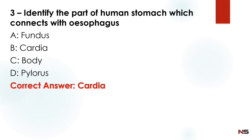Next question: Identify the part of the human stomach which connects with the esophagus. Option A: fundus. Option B: cardia. Option C: body. Option D: pylorus. The answer is Option B — cardia.